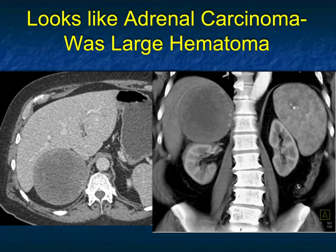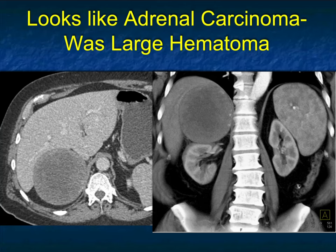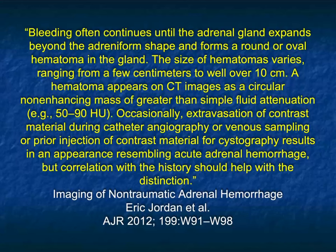Here's another case — patient presented with vague symptoms and a large mass over 10 centimeters, cystic with a more solid periphery. Could this be a necrotic tumor? Going through the differential, could it be a pheo — though we don't see hypervascular features, pheos can be cystic with rim-like enhancement. This was a large hematoma at pathology, but it was a benign lesion — an adenoma. The diagnosis can be very difficult.